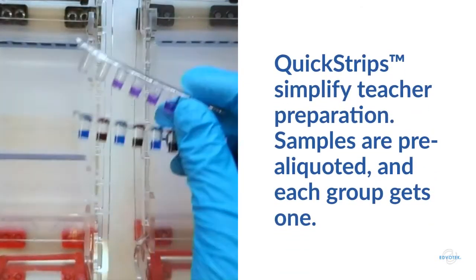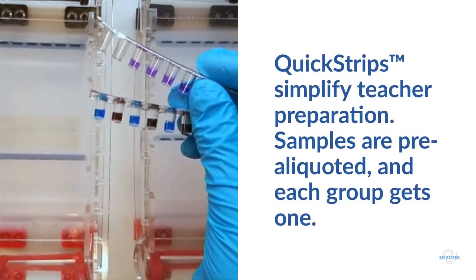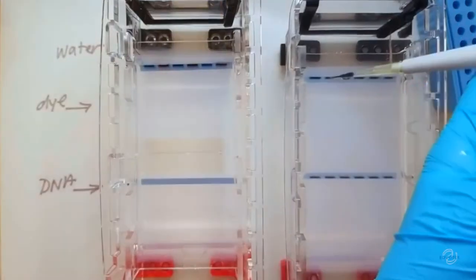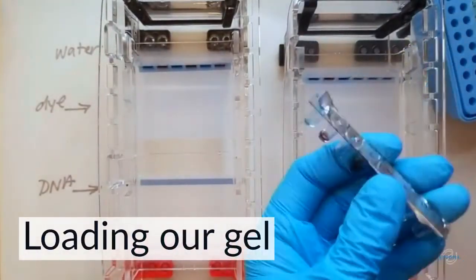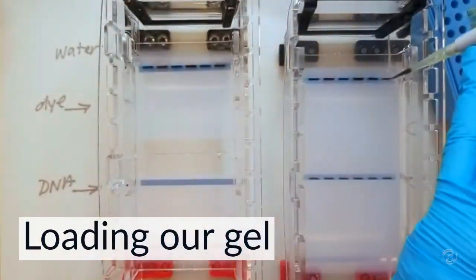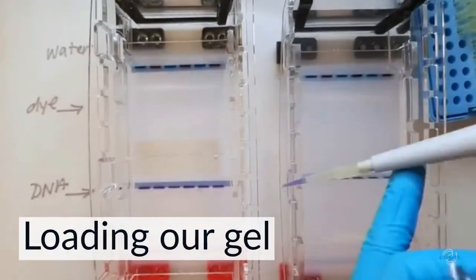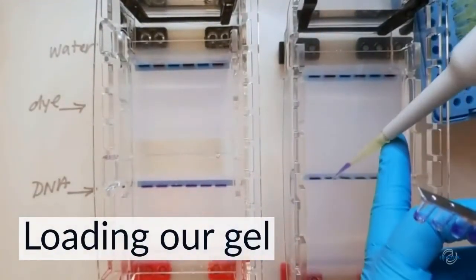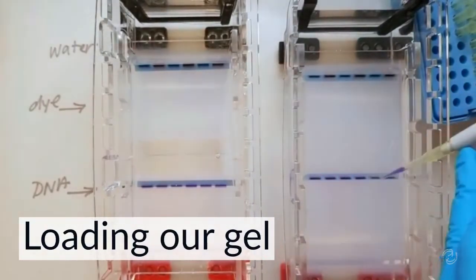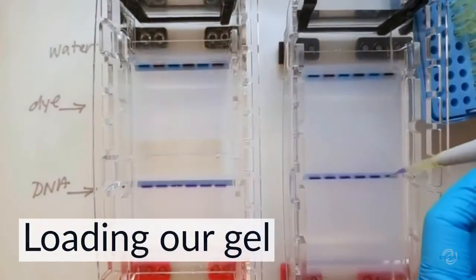The DNA and dye samples I'll be using today are in our quick strip format. They're already aliquoted and ready to use, which makes for easy pre-lab prep. We load the prepared samples into our gel using an adjustable volume micropipette. The pipette tip is switched between each well to prevent any kind of cross-contamination. You'll notice I use the pipette tip to puncture the foil of the quick strip before loading the sample.